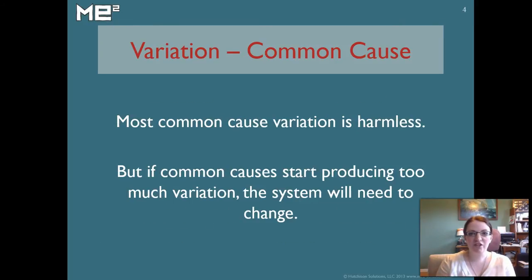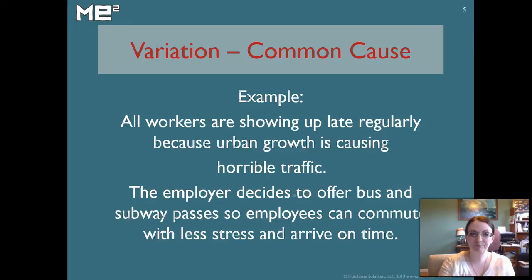Most common cause variation is totally harmless. You expect it to happen and you need to accept that that's always going to be part of your process. It's impossible to eliminate all variation. You just have to have healthy variation. The only time that common cause variation becomes unhealthy is if there's too much of it and it makes the system unstable. For example, it's okay to be late, just a couple minutes late to work. Say your commute varies by one or two minutes and that's no big deal.